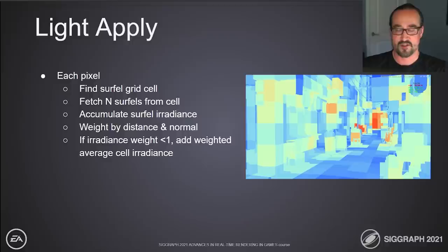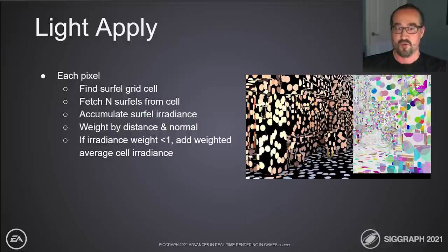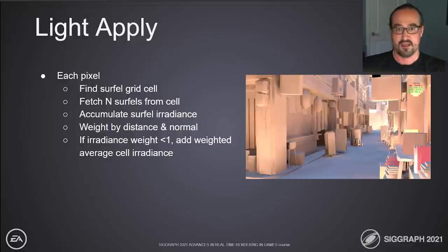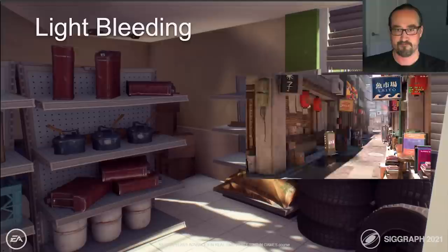How is surfel lighting actually applied to the screen? First, we reconstruct the world-space position of each screen-space pixel. Then we find the grid cell in the acceleration structure that overlaps that position, and fetch all the surfels inserted in that grid cell. We then loop over all those surfels and essentially treat them as virtual point lights, applying irradiance to the current texel weighted by their orientation and distance relative to the source pixel's position and orientation, among other things.